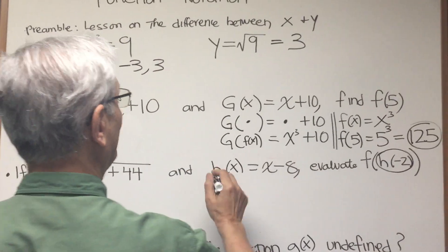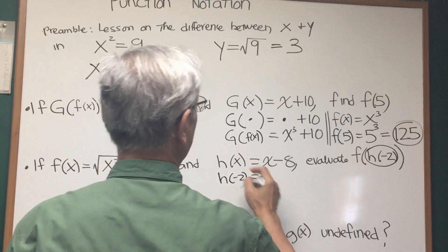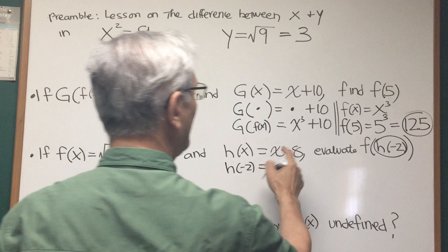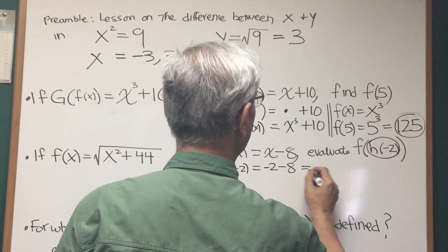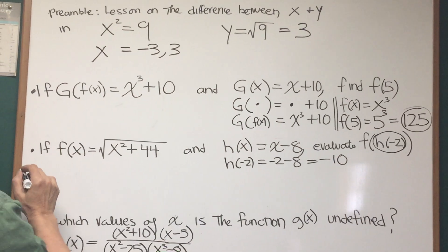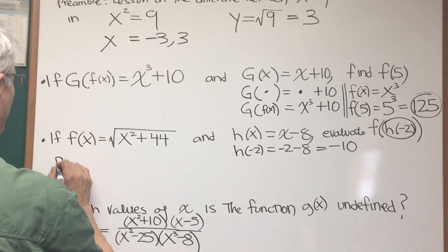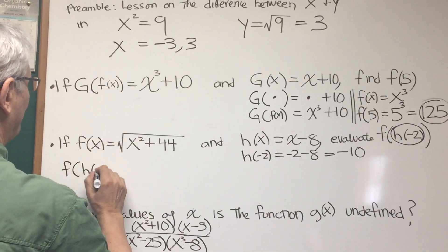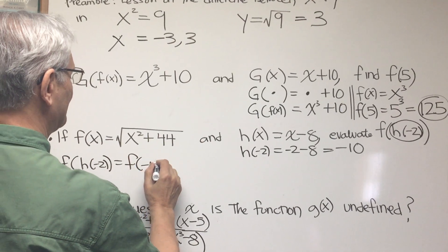And for that, we're going to go to the function defined by h. h of minus 2, we replace x with minus 2 on the left, x with minus 2 on the right, and we see that h of minus 2 is minus 10. So, therefore, f of h of minus 2 is equal to f of minus 10.